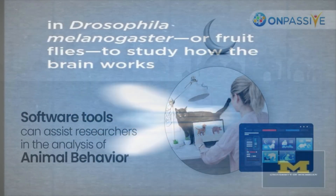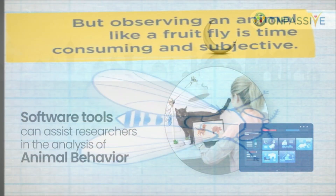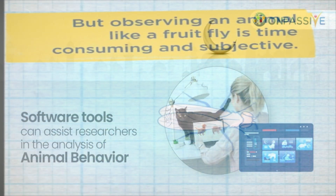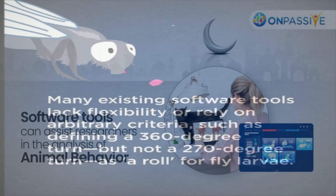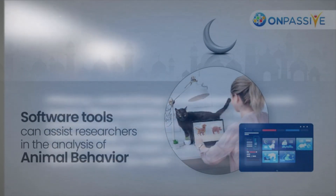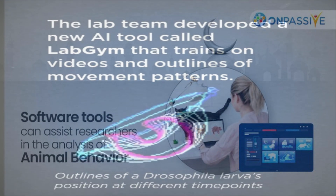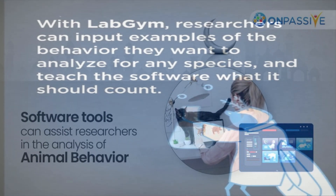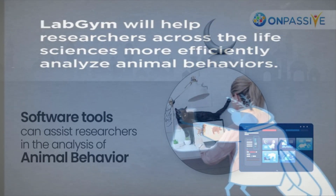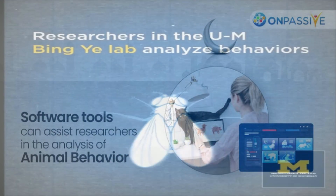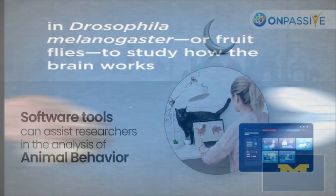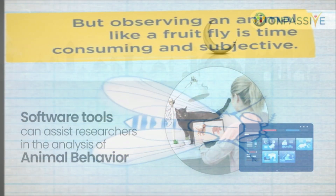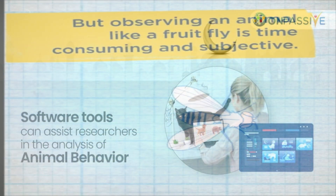Scientists need to evaluate animal behaviors for a variety of reasons, ranging from knowing how a specific medicine may influence an organism to mapping how circuits in the brain communicate to produce a specific behavior. Researchers in the lab of UM faculty member Bing Yi use Drosophila melanogaster as a model to investigate the development and functioning of the nervous system. Because fruit flies and humans share many genes, these studies often offer insights into human health and disease.